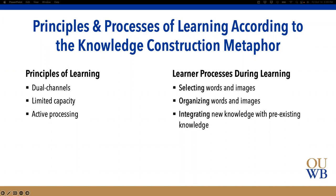These principles of learning govern how learning happens and what its limitations are. Learners go through specific processes — without which learning doesn't happen. First, they must pay attention to the relevant words and images in the presented material. Second, they need to mentally organize the material they select into a coherent verbal or pictorial representation. Finally, they integrate that new knowledge with pre-existing knowledge already stored in long-term memory.